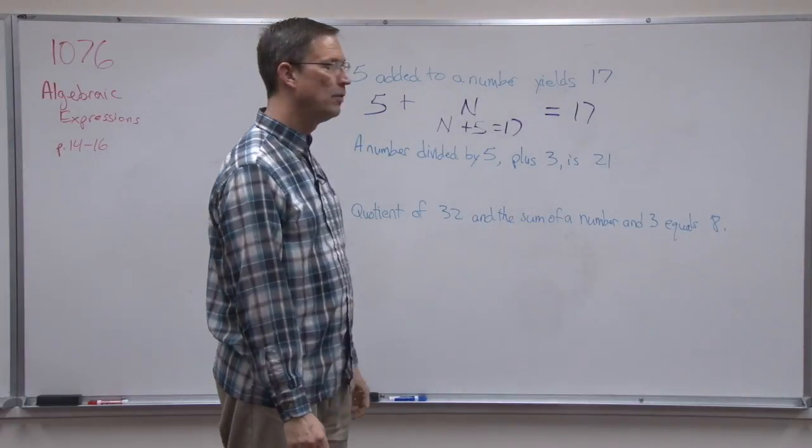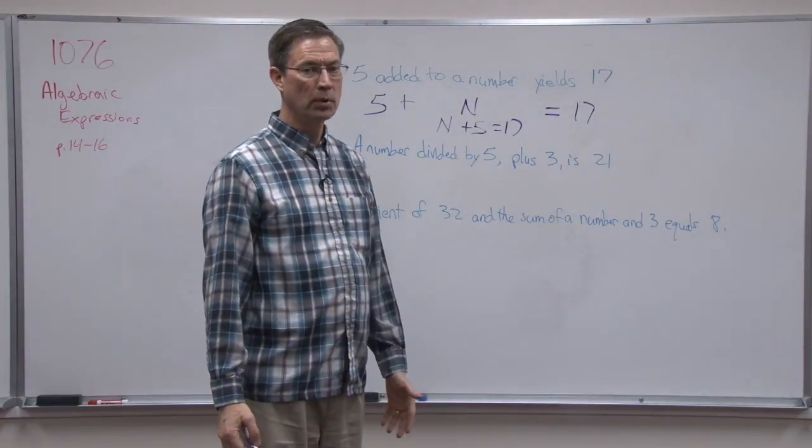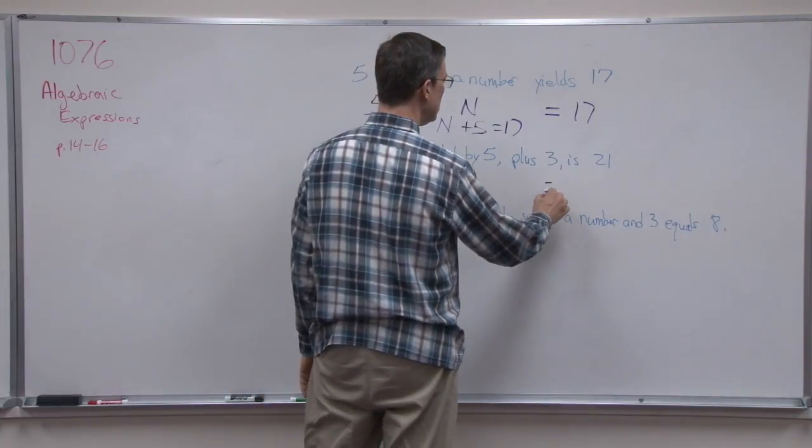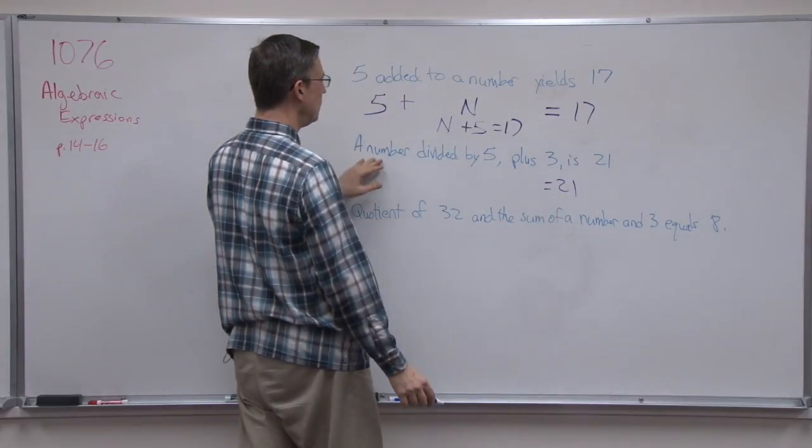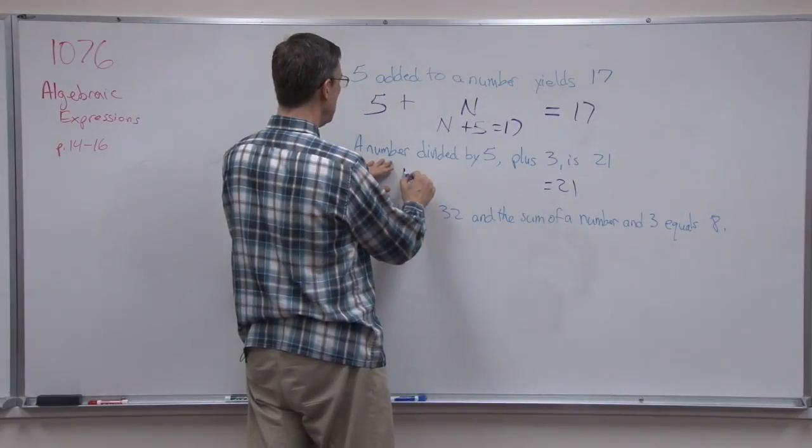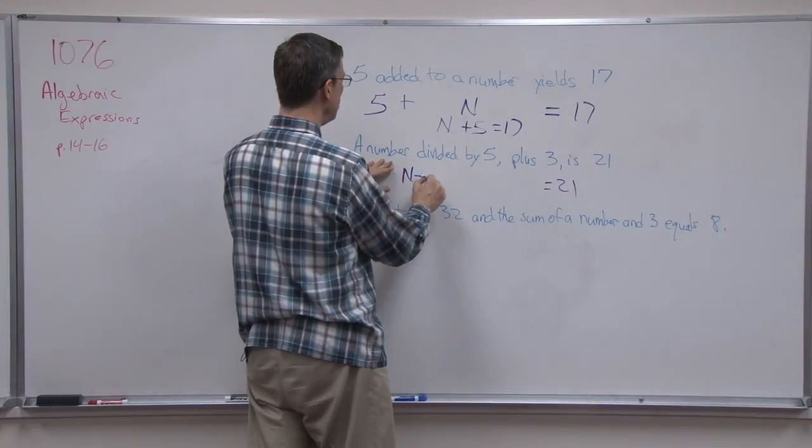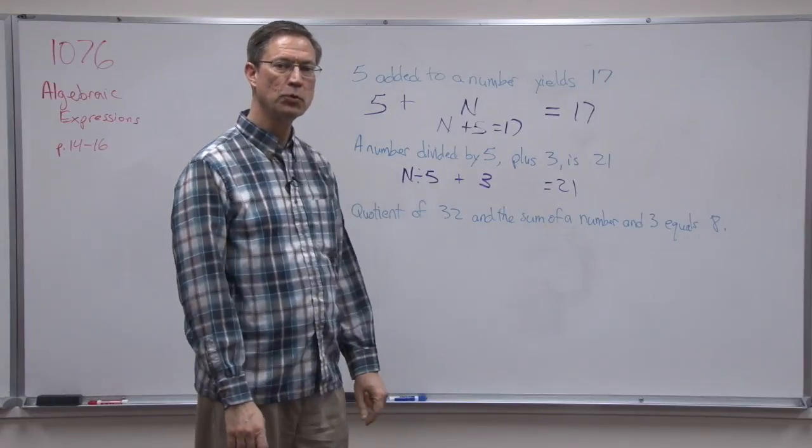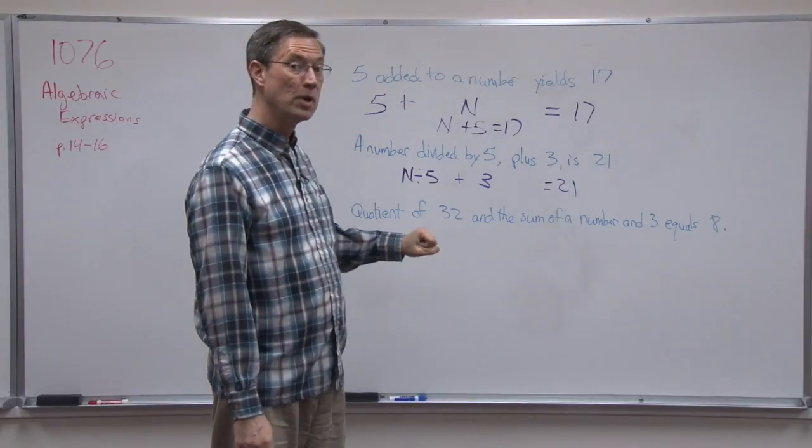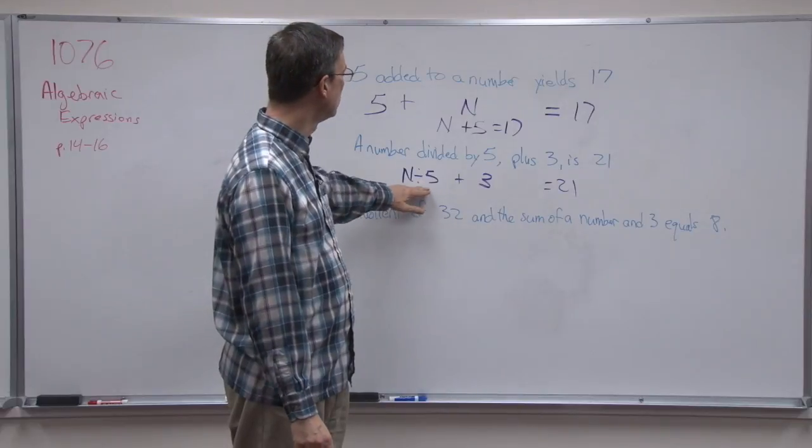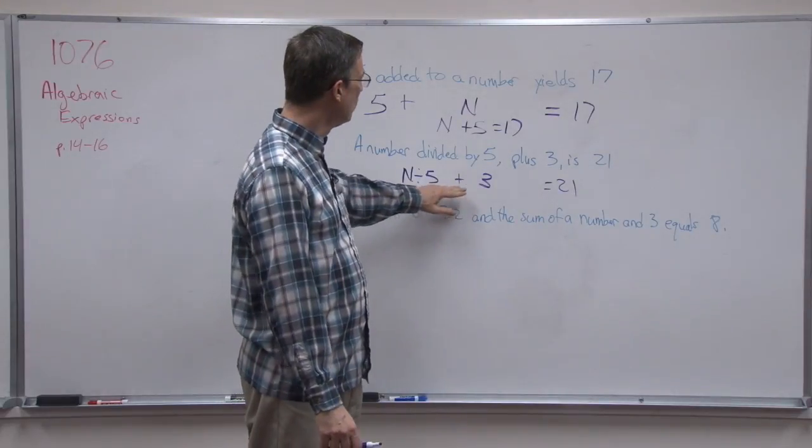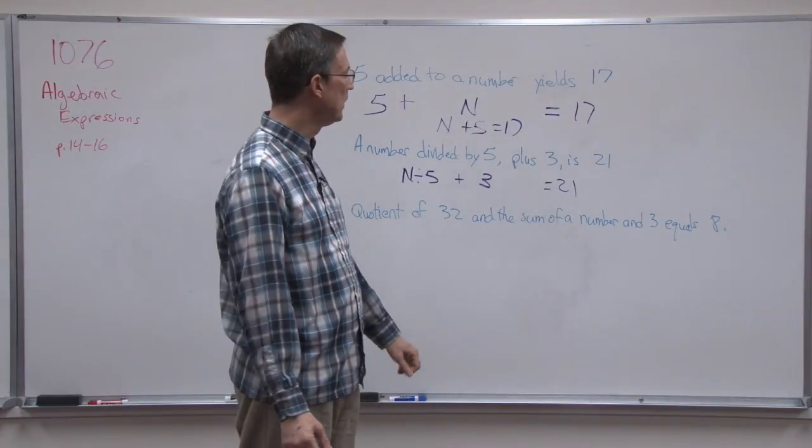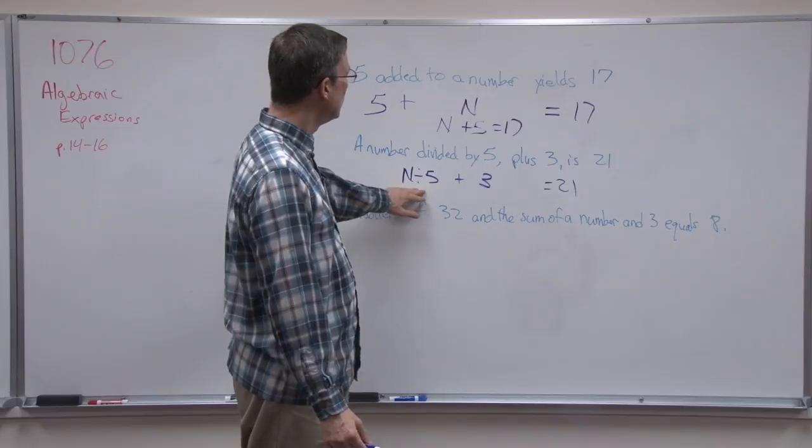Let's look at this one. A number divided by 5 plus 3 is 21. Let's start with the easy one here: equals 21. We're going to start with a number divided by 5. So I could say N divided by 5 plus 3 equals 21, because in the order of operations you should always do the dividing, multiplying and dividing, before you do addition and subtraction. Remember Please Excuse My Dear Aunt Sally from the first video?